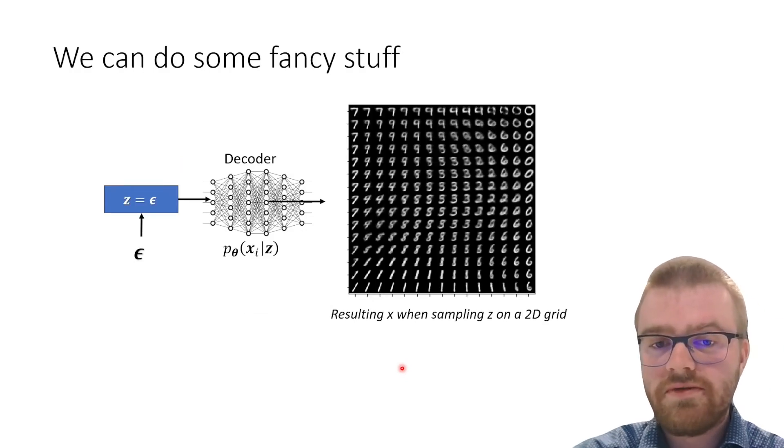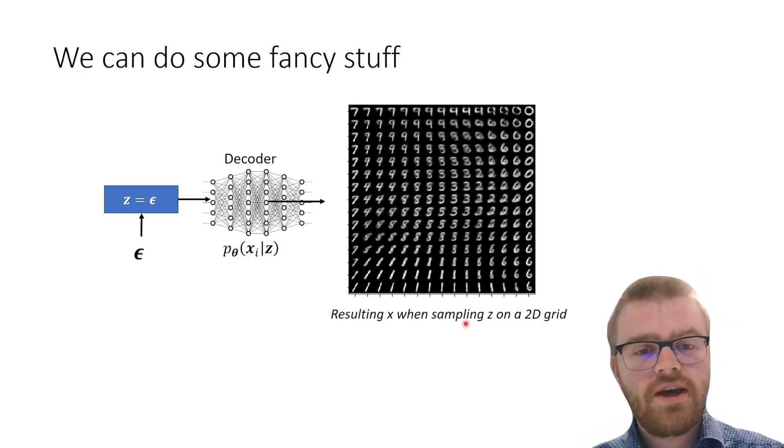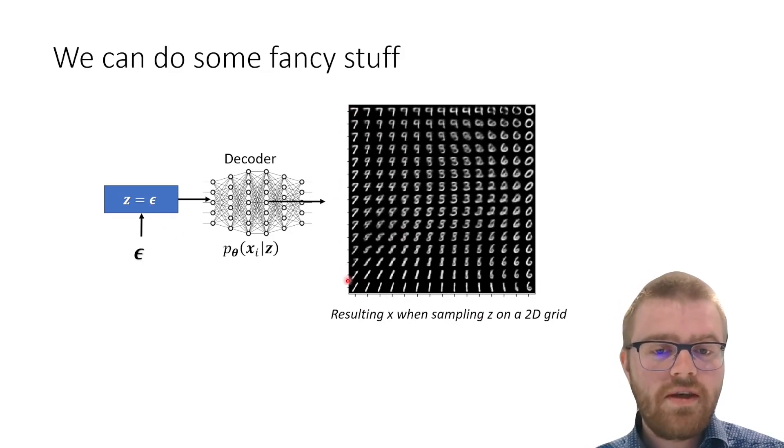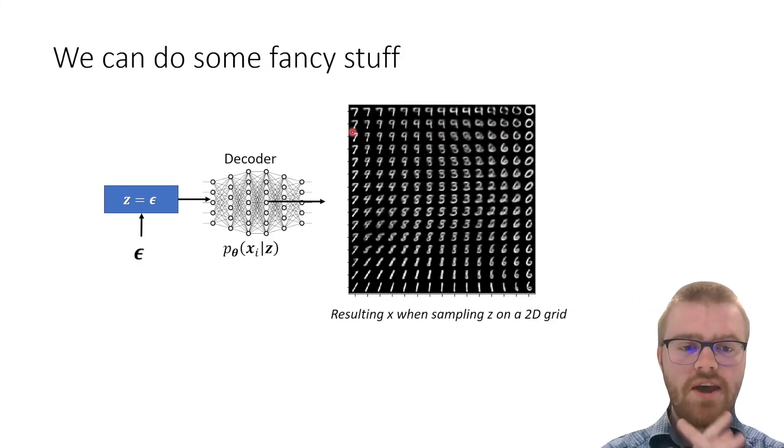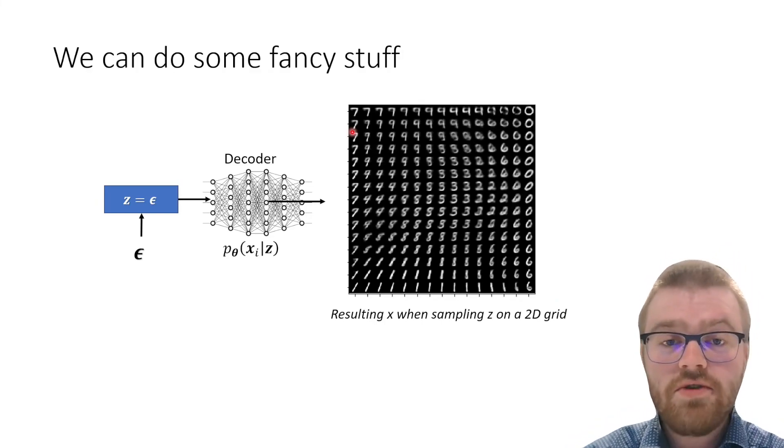Then we can also do some very fancy stuff. For example, if we have a two-dimensional latent code, we can observe what picture is situated everywhere. Over here we've trained this on MNIST and we can see that over here we've got ones, sixes and zeros and nines and sevens. It's nicely distributed in this latent space. You will actually be seeing the same in the exercises.